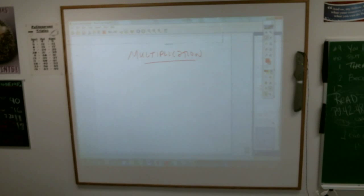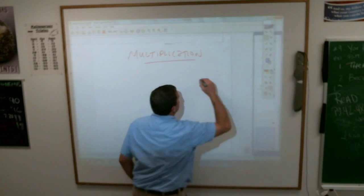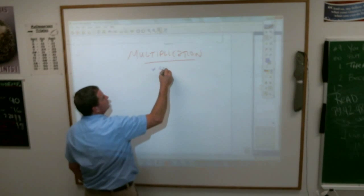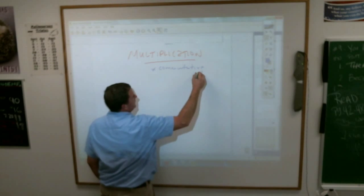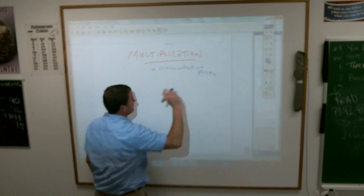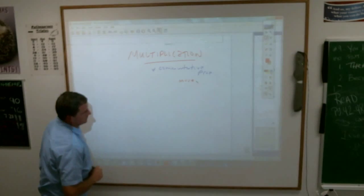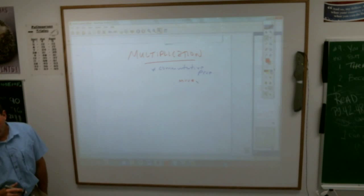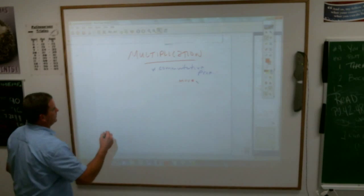Because of the commutative property, I'm sure we remember that, the commutative property which says that you can move stuff around, your life can be made much easier. Because today we're talking about multiplying three factors.